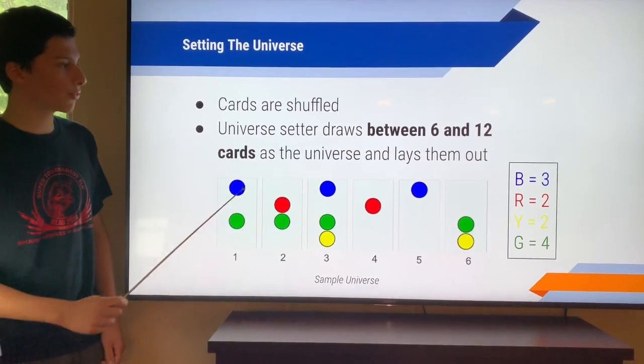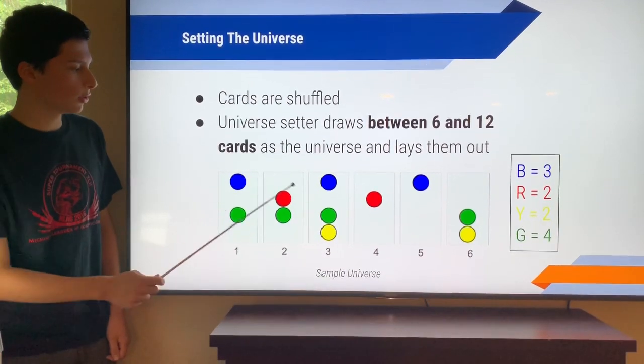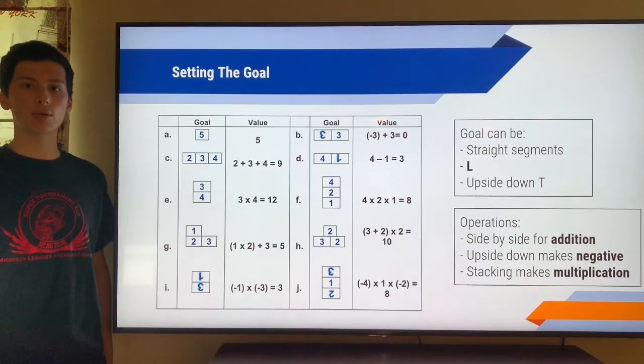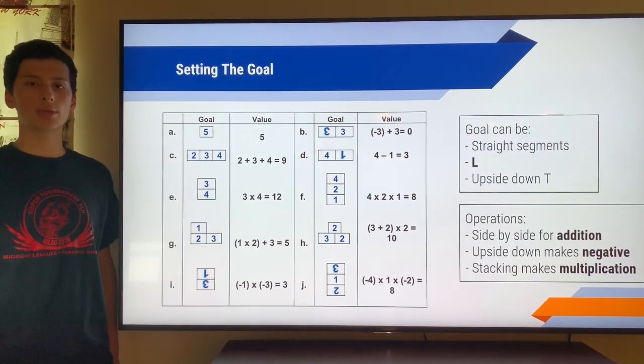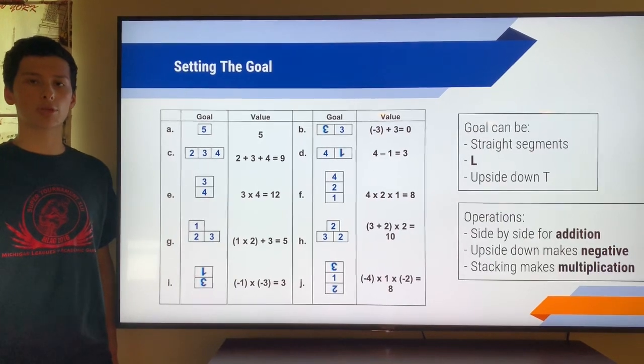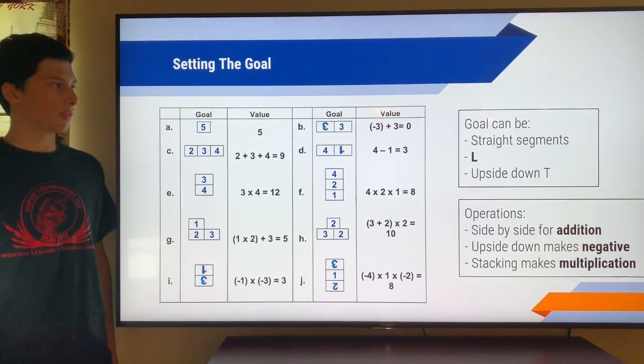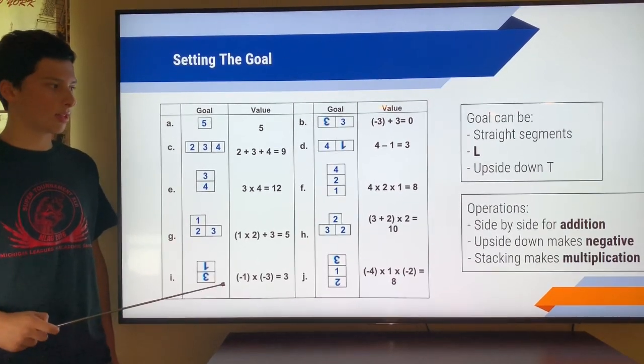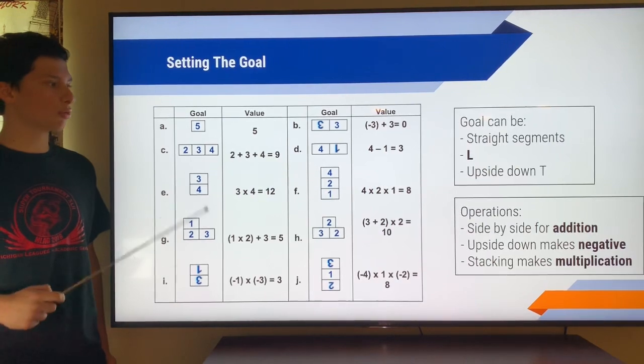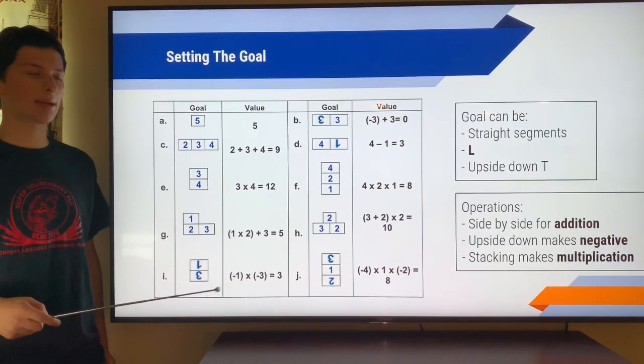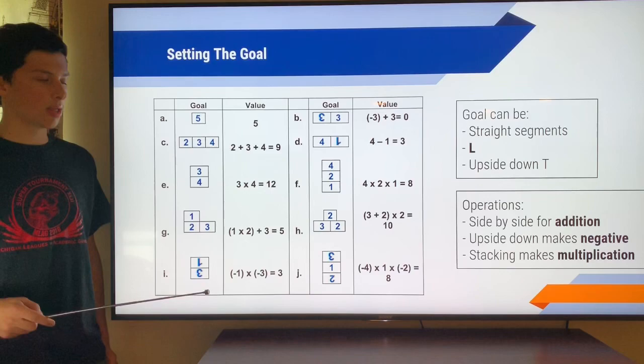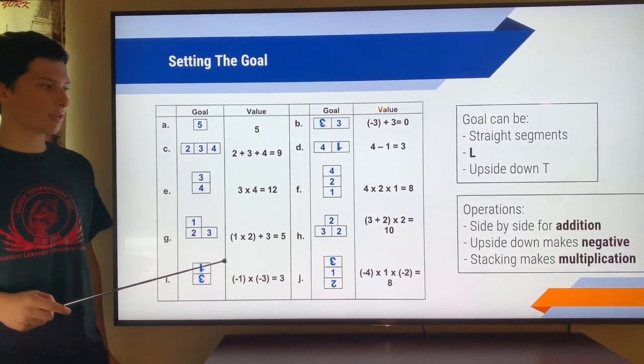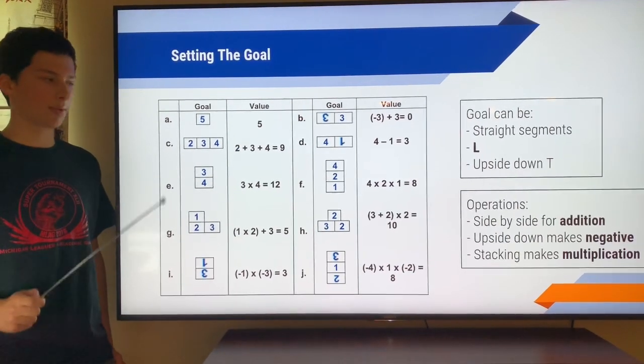In this example, there are 3 color blue cards, 2 reds, 4 greens, and 2 yellows. It's the goal setter's job to set the goal. They can use up to 3 of the numeral cubes that are found when rolled. The goal can be arranged in a straight segment, an L, or an upside down T. Since these are numerals, you can also do operations. If you put a cube side by side with another cube, you add them. If you put an upside down cube, you make it upside down, then it becomes negative. And if you stack cubes up and down, then that's multiplication.